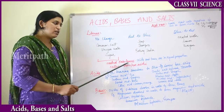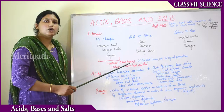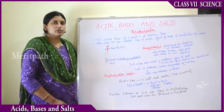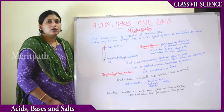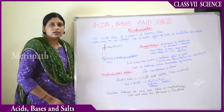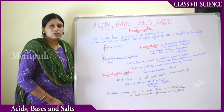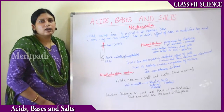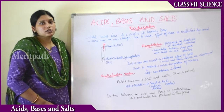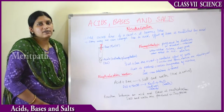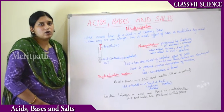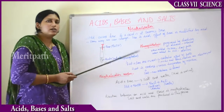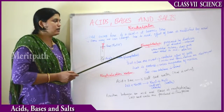Now let's move to neutral substances and how neutralization reactions occur. A substance which is neither acidic nor basic is known as a neutral substance, in which the acidic and basic proportions are equal. We cannot say whether it is acidic or basic — it is simply neutral.